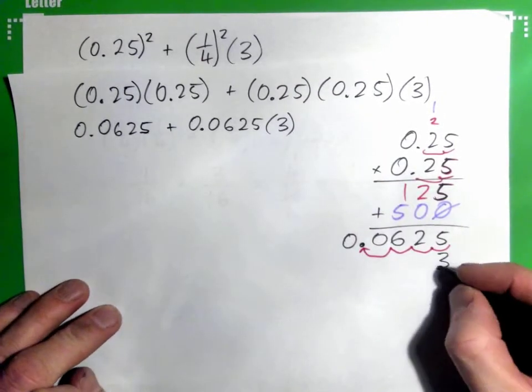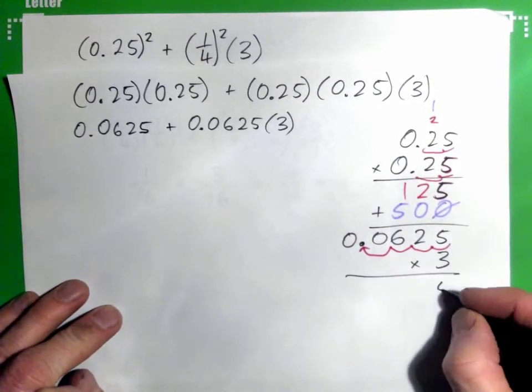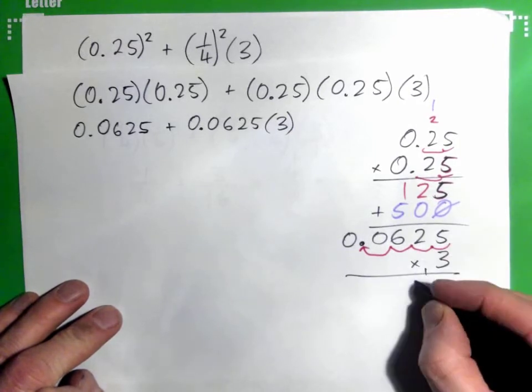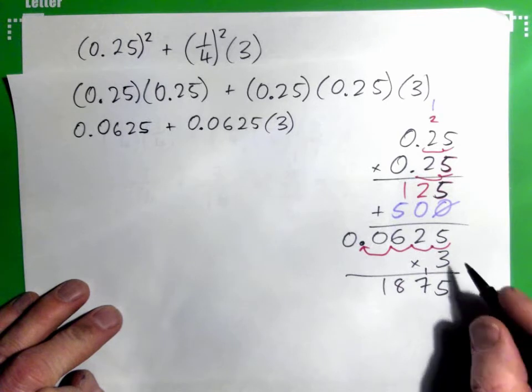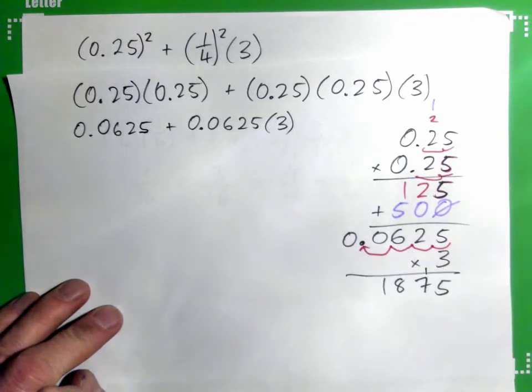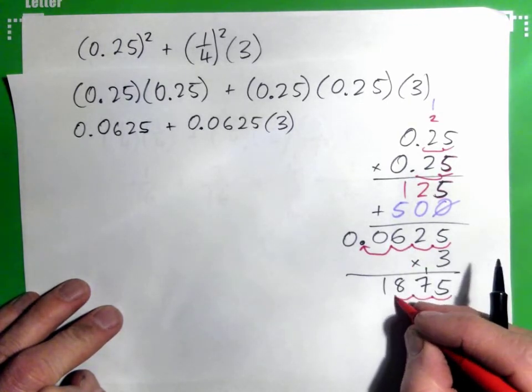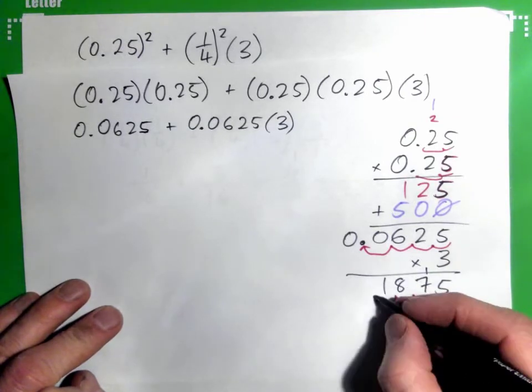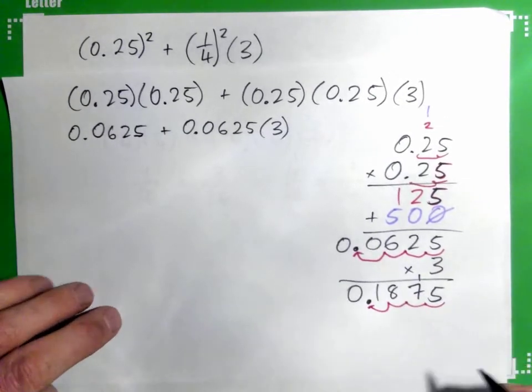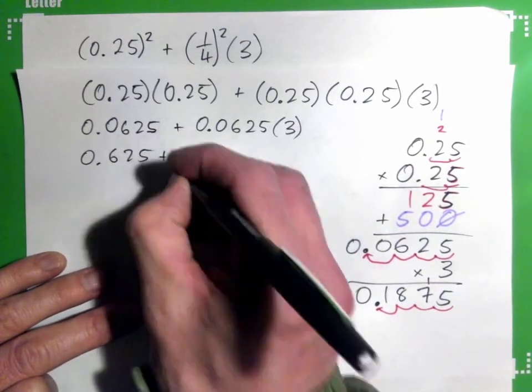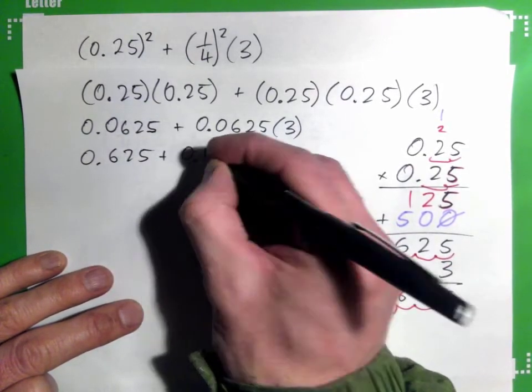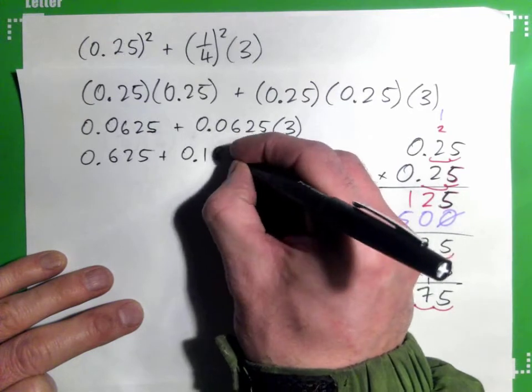And then we have times 3. So, I guess we've got to multiply this guy by 3. That's 15, carry 1, and that's 7, and that's 18. And there's 1, 2, 3, 4 in the question, so there should be 1, 2, 3, 4 in the answer, so that's a point. So we should have 0.0625 plus 0.1875.